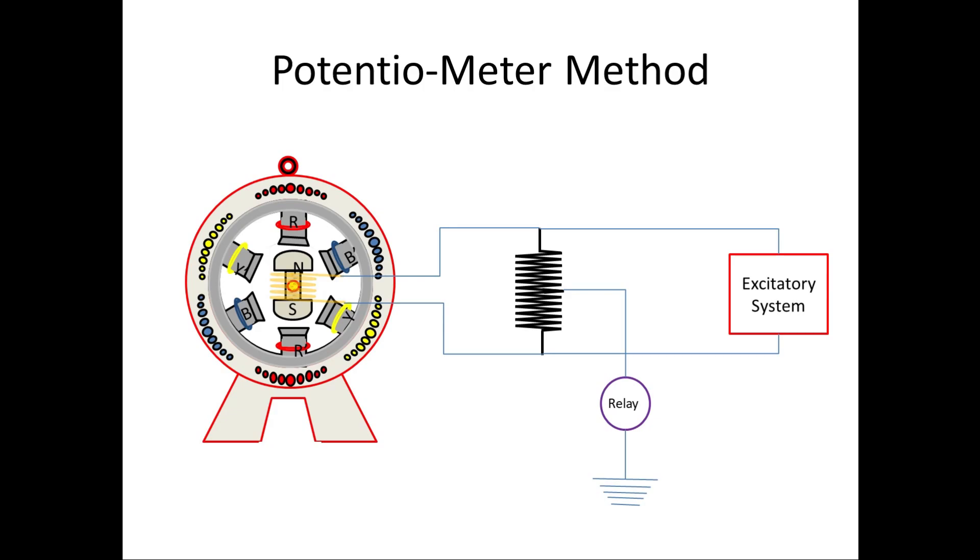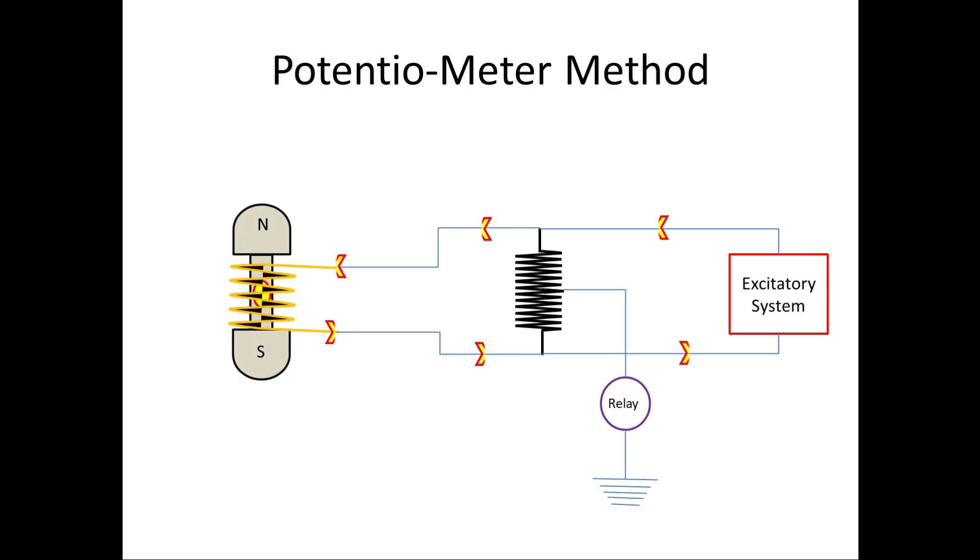If you see the construction of this method, the circuit is parallel between the rotor coil and exciter. A high resistor is connected, and from this high resistance the center point is taken to voltage relay through grounding.